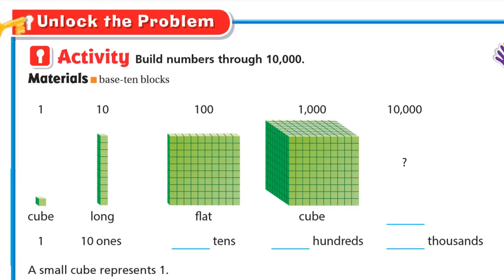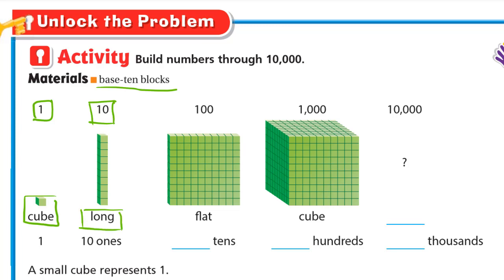Build numbers through 10,000. We will need the base-10 blocks. First, we start with the 1, and the 1 is the small cube. Then 10 small cubes, which is 10 ones, means 10, and it will look like a long. Then 10 of these longs means 10 tens; 10 tens is 100, and its shape is a flat.